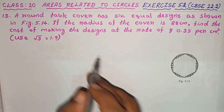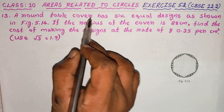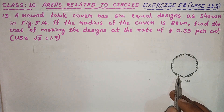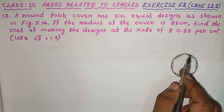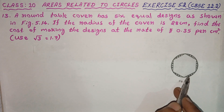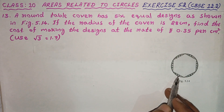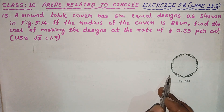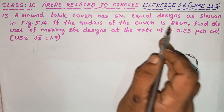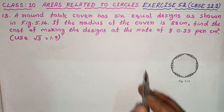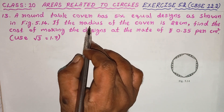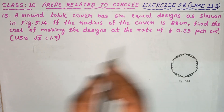First, let's look at the question. A round table cover has 6 equal designs: 1, 2, 3, 4, 5, 6 — six equal designs. The radius of the circle is 28 cm.